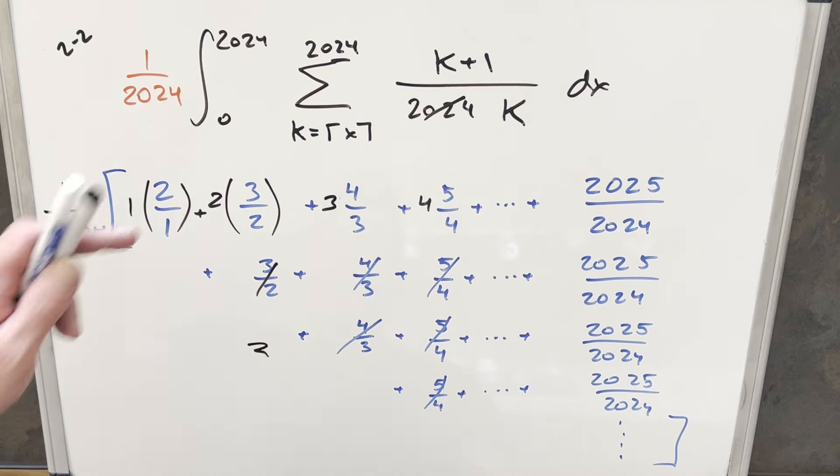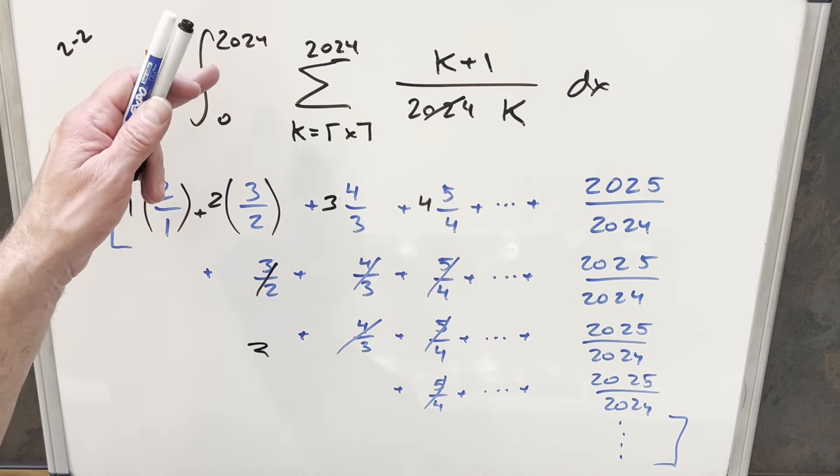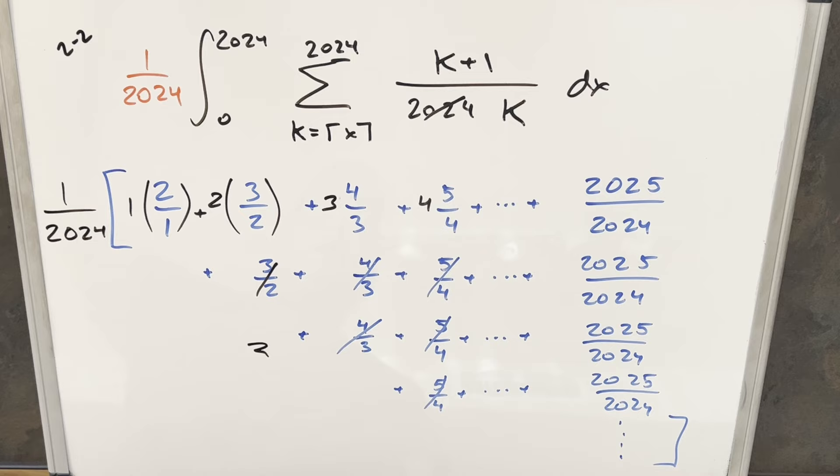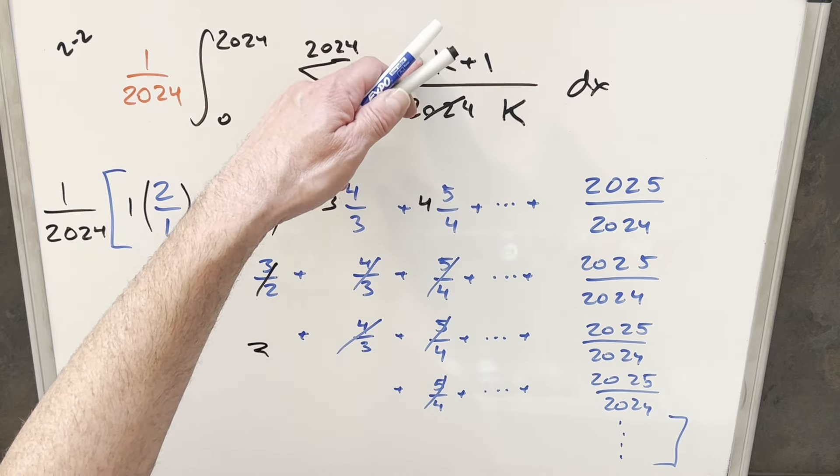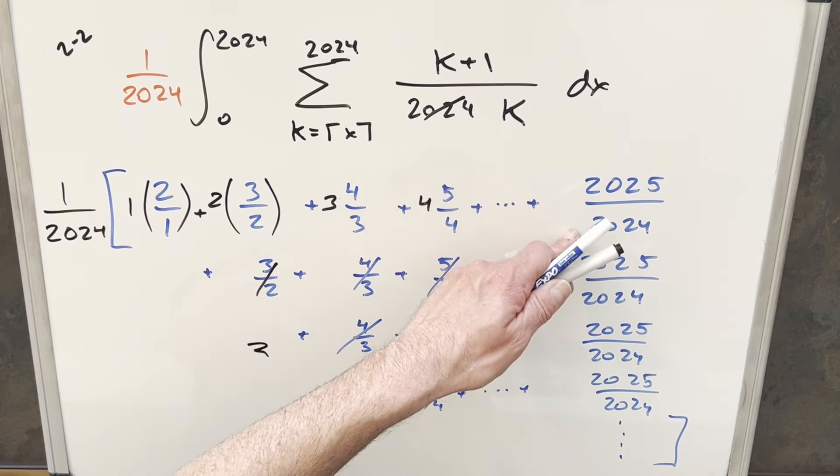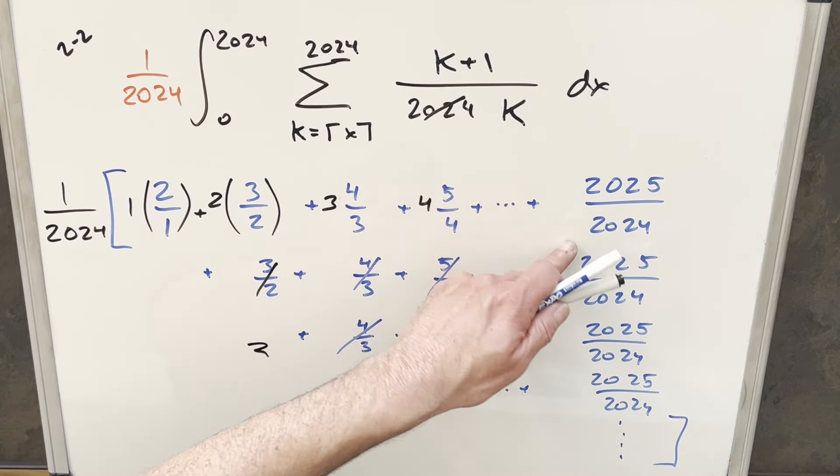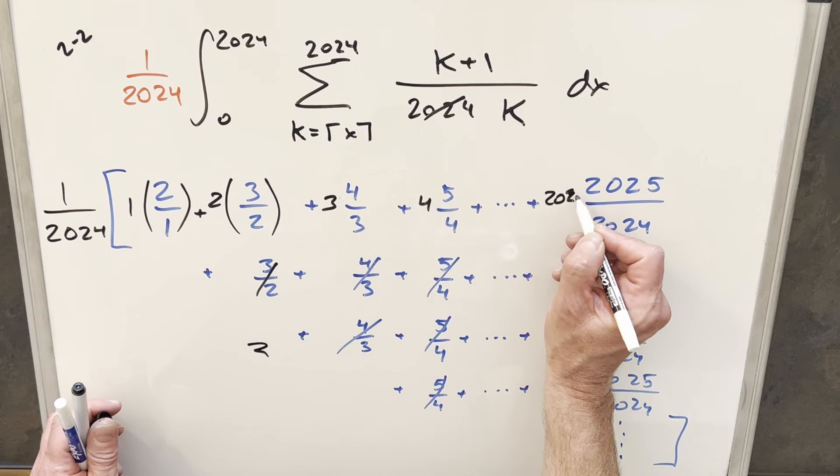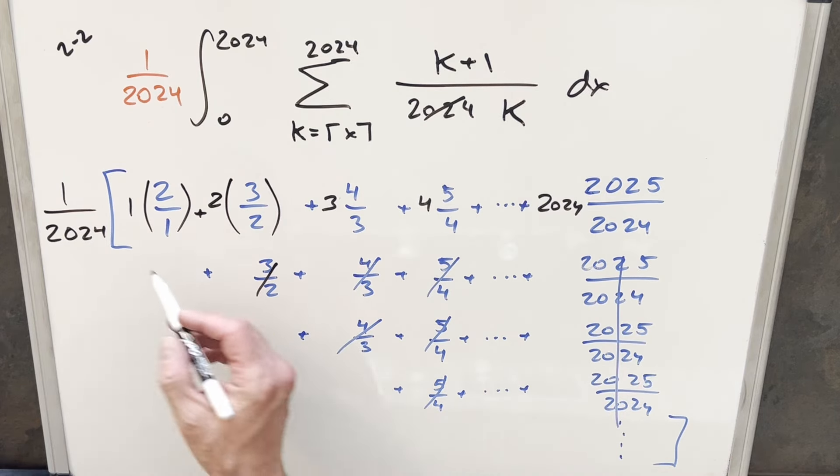And I've erased it from our board, but our last integral was going from 2023 to 2024. And for that one, the value here for our k value became 2025. It became this 2025 to 2024. So this last value is actually included in every single integral. So we have 2024 copies of this one.